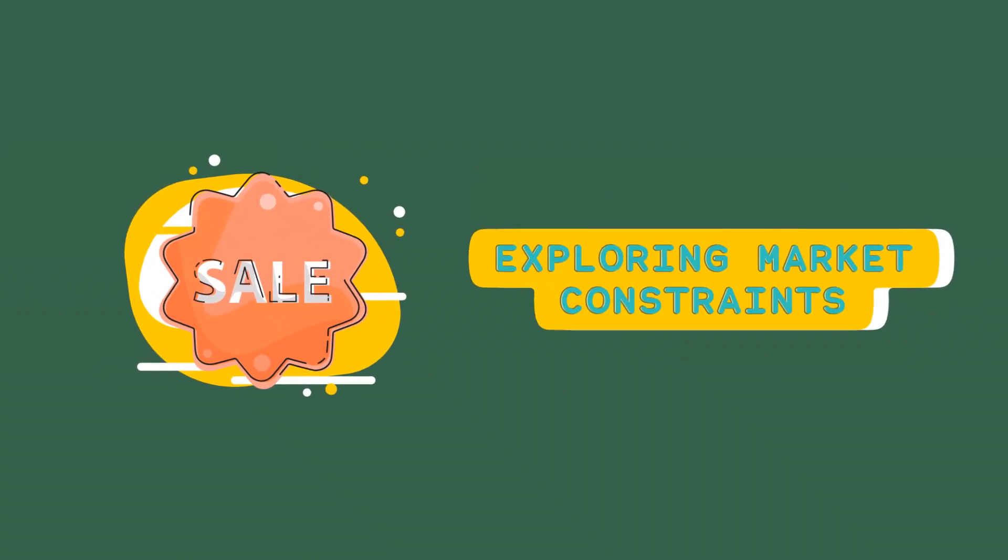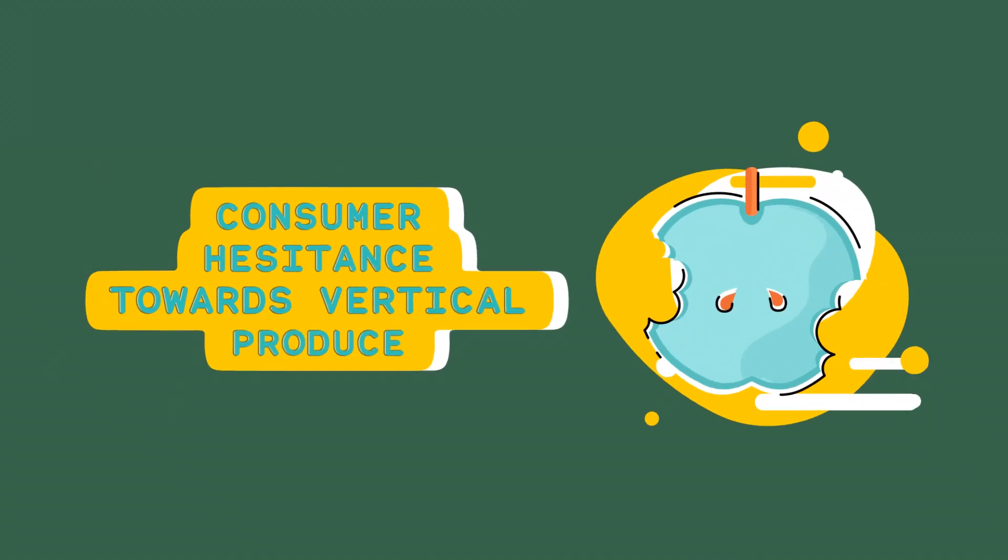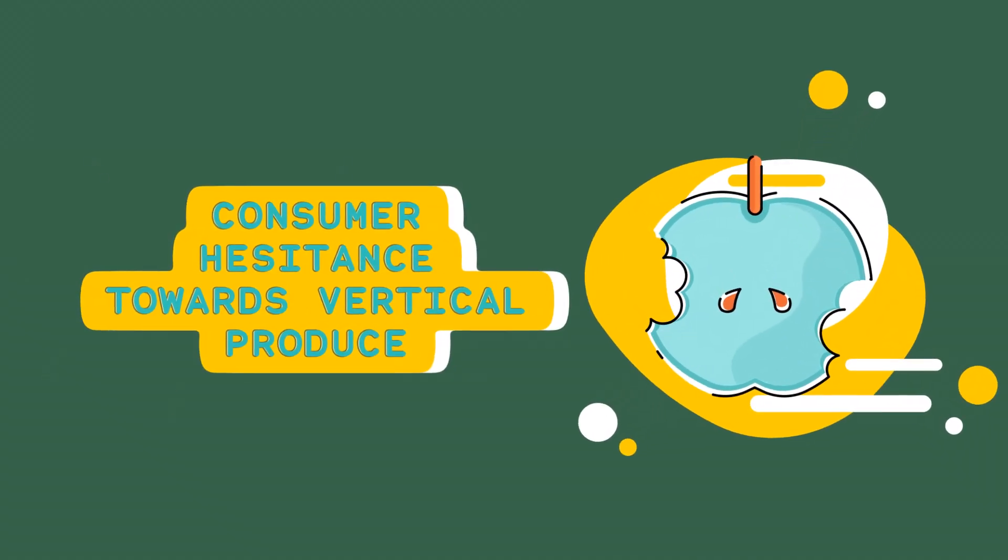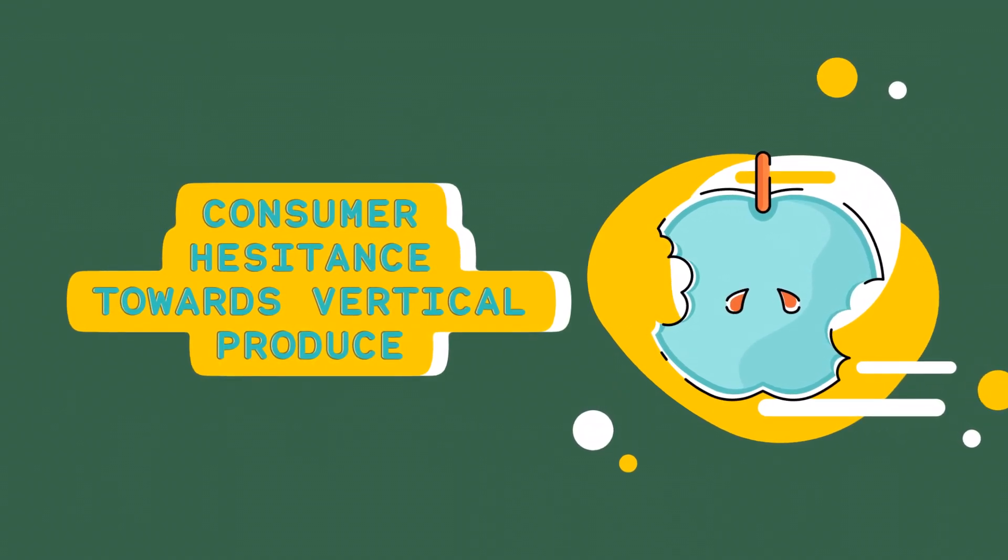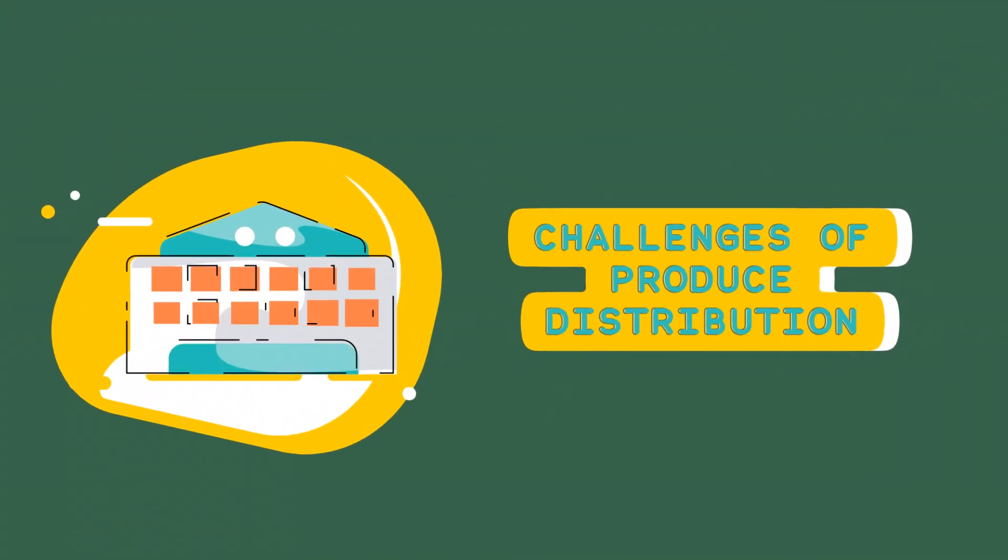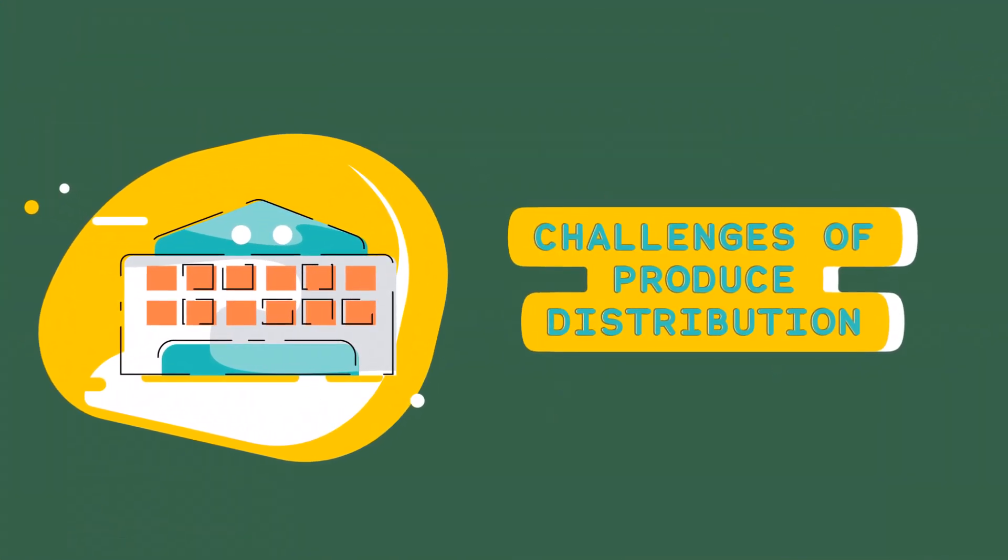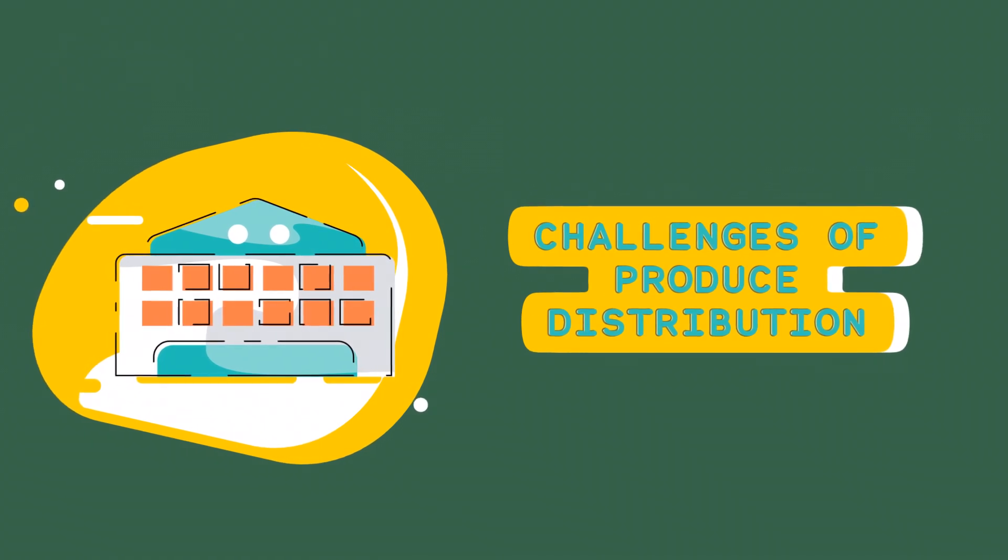Market limitations. Consumer acceptance. Consumers may be hesitant to adopt vertically grown produce, especially if it is perceived as being different or more expensive than traditional produce. Distribution challenges. Distributing produce from vertical farms to retail outlets can be logistically complex and costly.